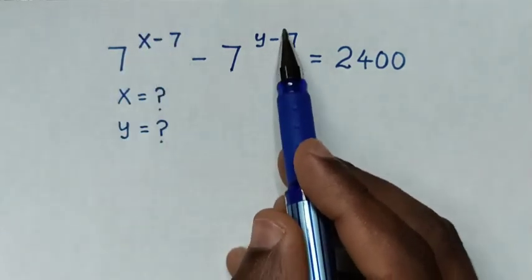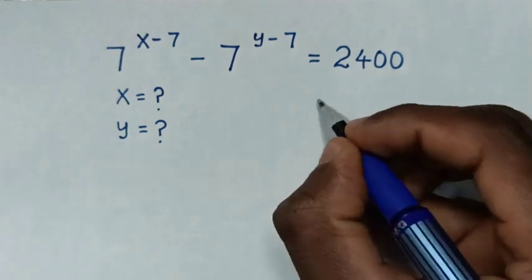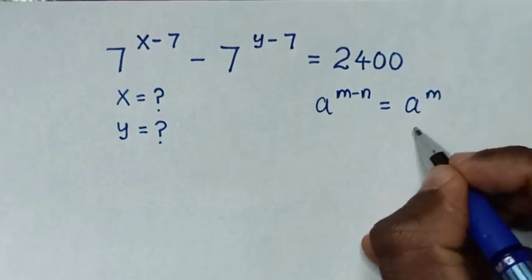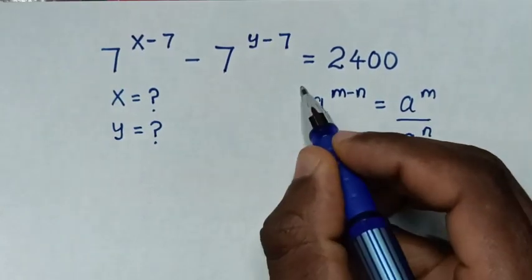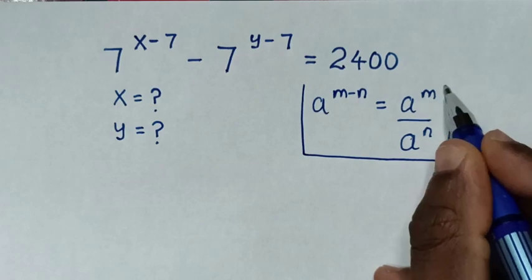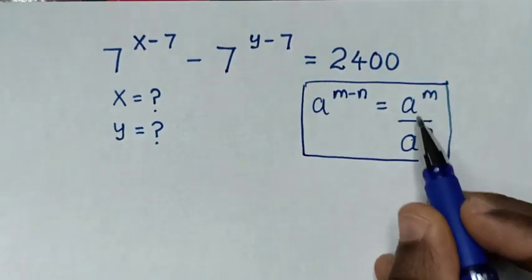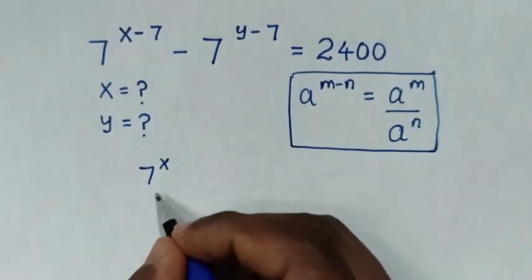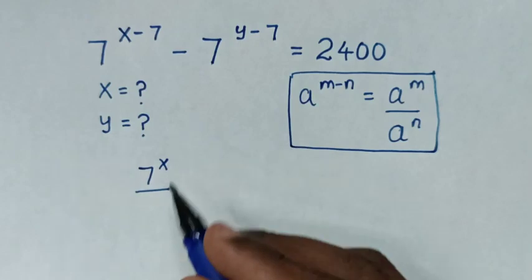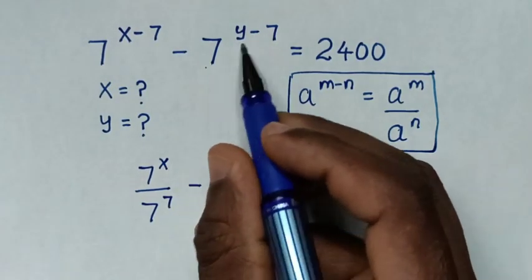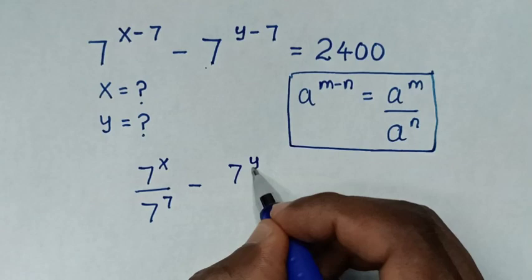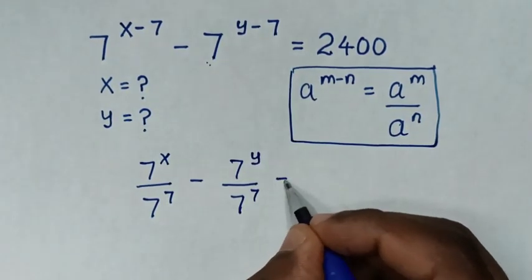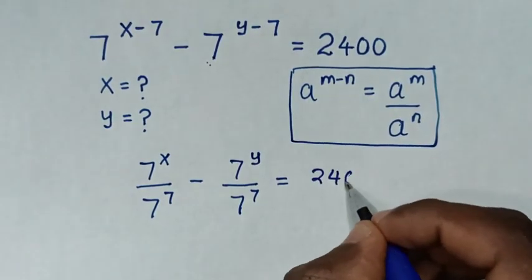From this exponent and this exponent, which is in the form of a power of m minus n, which is equal to a power of m over a power of n — so it will be division of exponents. Then it will be 7 power of x over 7 power of 7, minus 7 power of y over 7 power of 7, is equal to 2400.